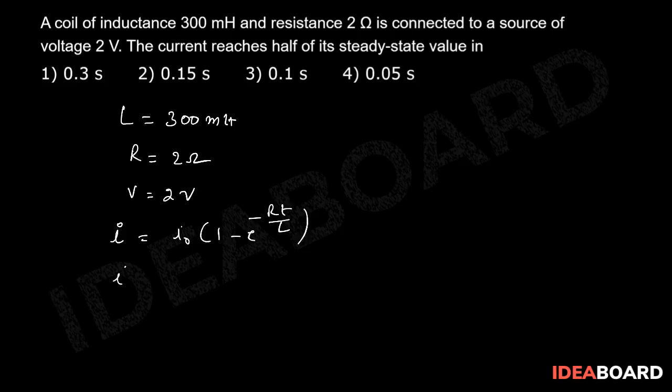Given that I equal to I0 by 2. Therefore I0 by 2 equal to I0 into 1 minus e power minus RT by L. That is, e power minus RT by L equal to 1 by 2.